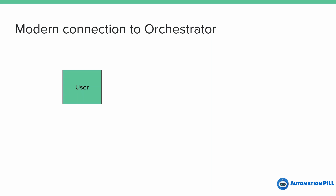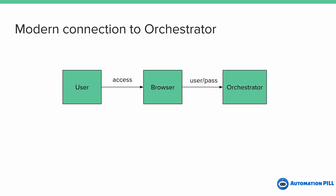The flow is like this: first the user accesses the browser and authenticates using a username and password — or you can use Gmail or another authentication method. Then the Orchestrator sends back to the browser a value called a token. Think of a token as a string, like a secret key — it's the agreement between the Orchestrator and the browser that authentication is valid.